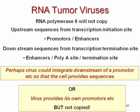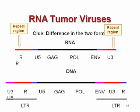But as I said, these control sequences are not copied. The clue as to how this happens comes from a not-so-subtle difference between the RNA version of the virus and the DNA version. The RNA version of the virus has three genes: GAG, POL, and ENV. That's all you need to make the proteins of the virus.